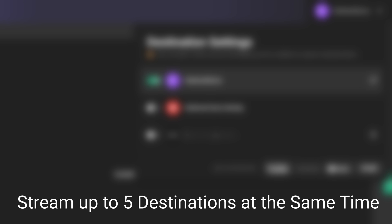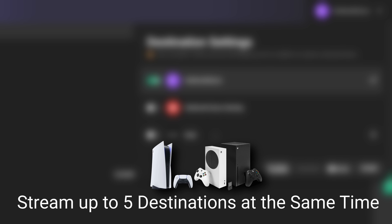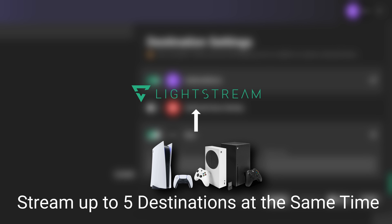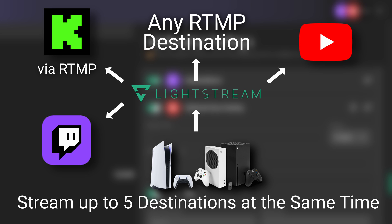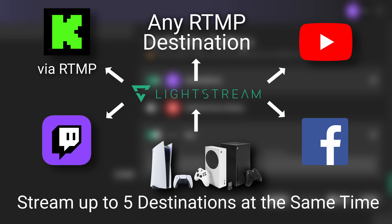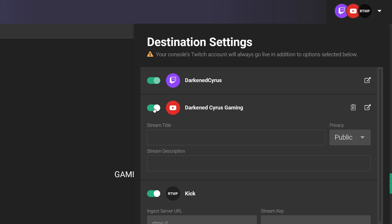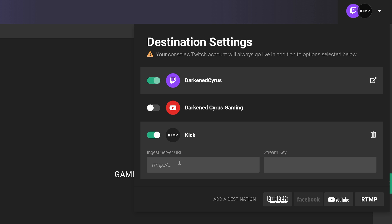Lightstream now supports simulcasting to go between any platform that you want to connect, either by RTMP source of any kind or to any streaming service that's already natively added to their platform. Just toggle the destinations you'd like to stream to in the destinations drawer and go live from your console as normal.